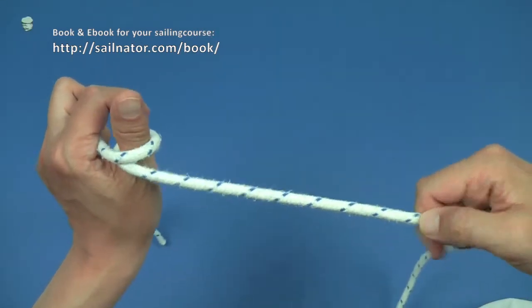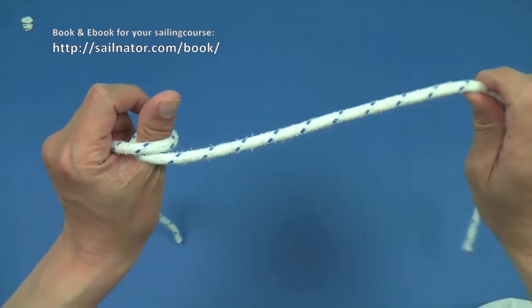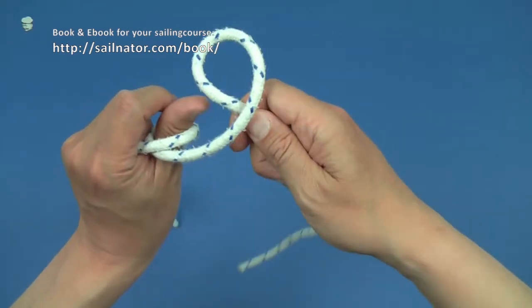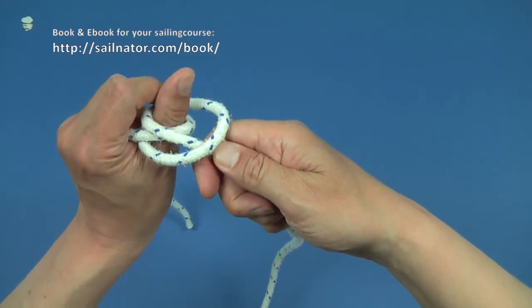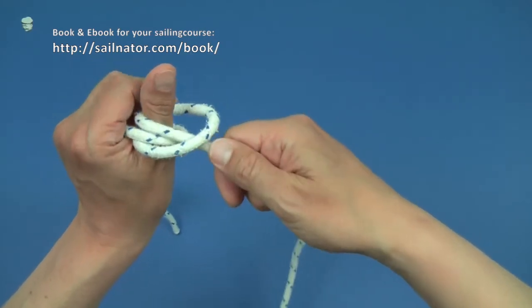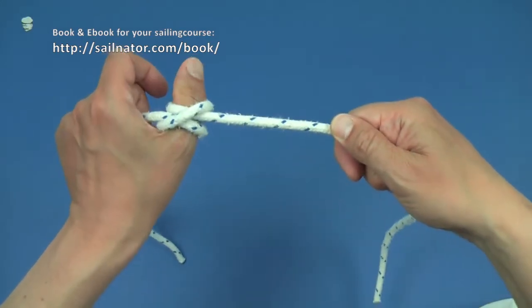Now I lay a second loop the same way as the first one and put it over the post too, above the other loop. From the side we see again two parallel lines crossed by one line. The thrown clove hitch is finished.